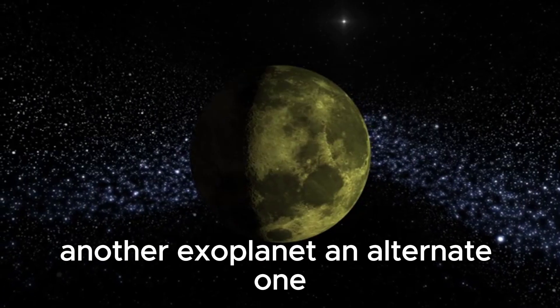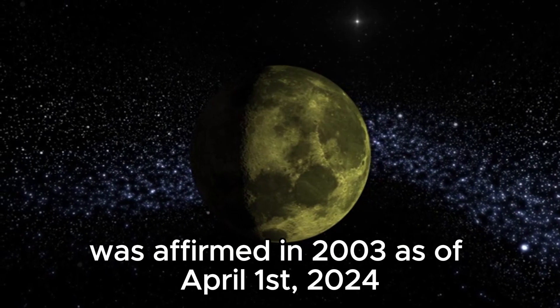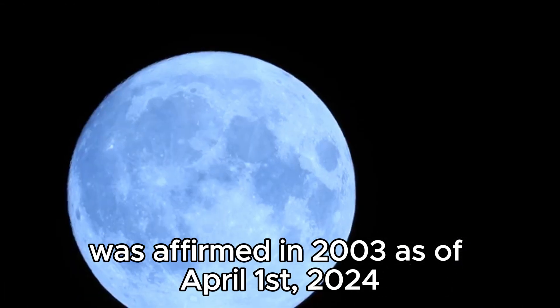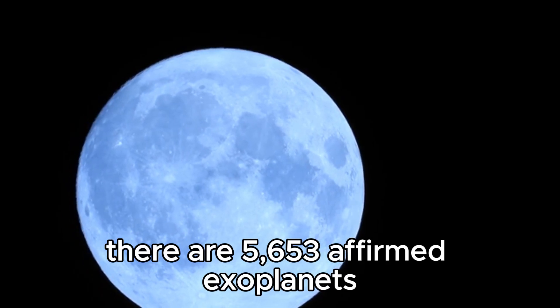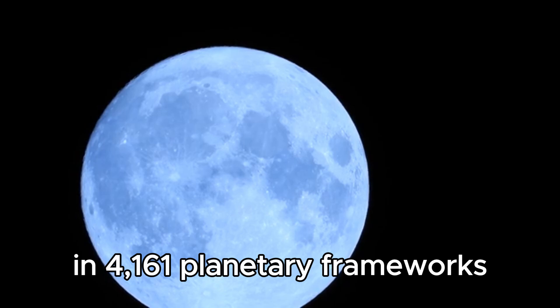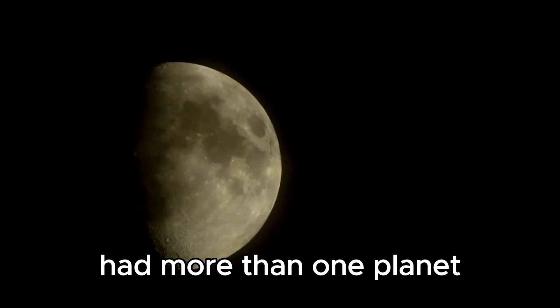Another exoplanet, a different one which was first detected in 1988, was confirmed in 2003. As of the 1st of April, 2024, there are 5,653 confirmed exoplanets in 4,161 planetary systems. Out of them, 896 systems had more than one planet.